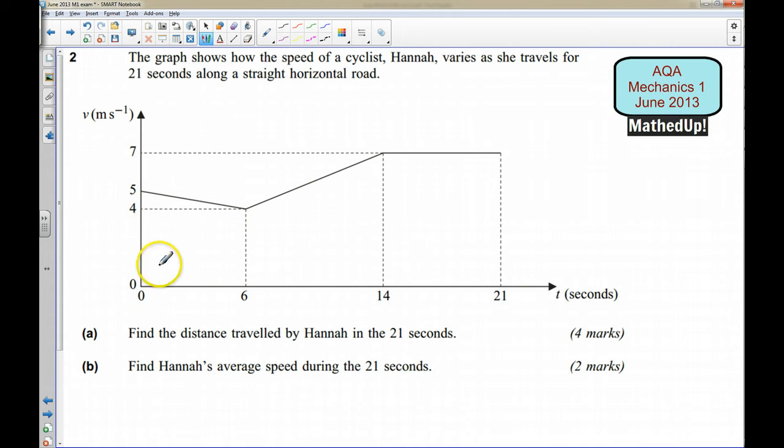We've got the parallel sides here of length 4 and 5 and then we've got the height or the distance between the parallel sides which is 6. So to work out this one I'll do A plus B divided by 2 so we've got 4 plus 5 divided by 2 and times that by the height which is 6.